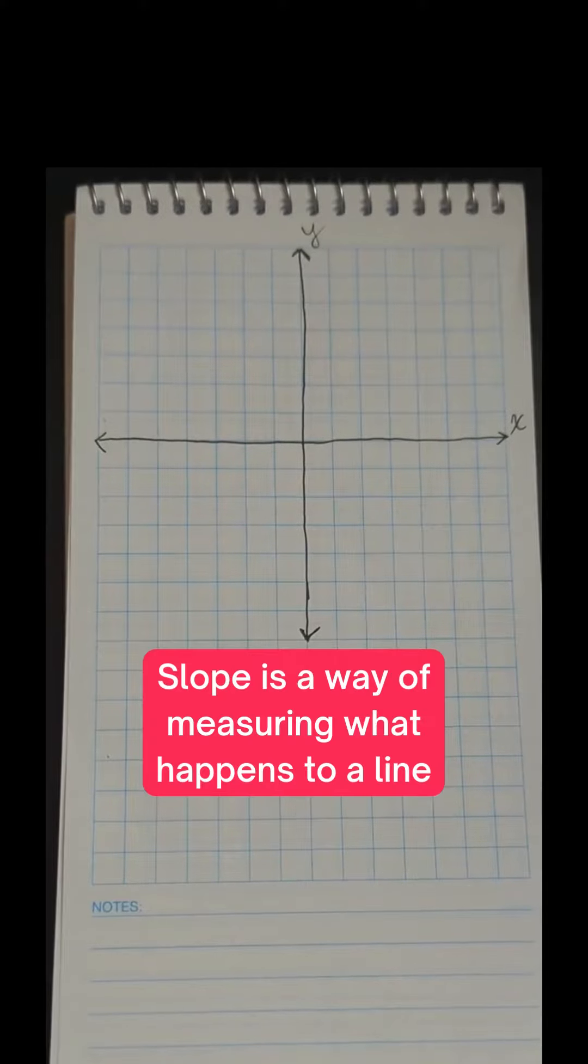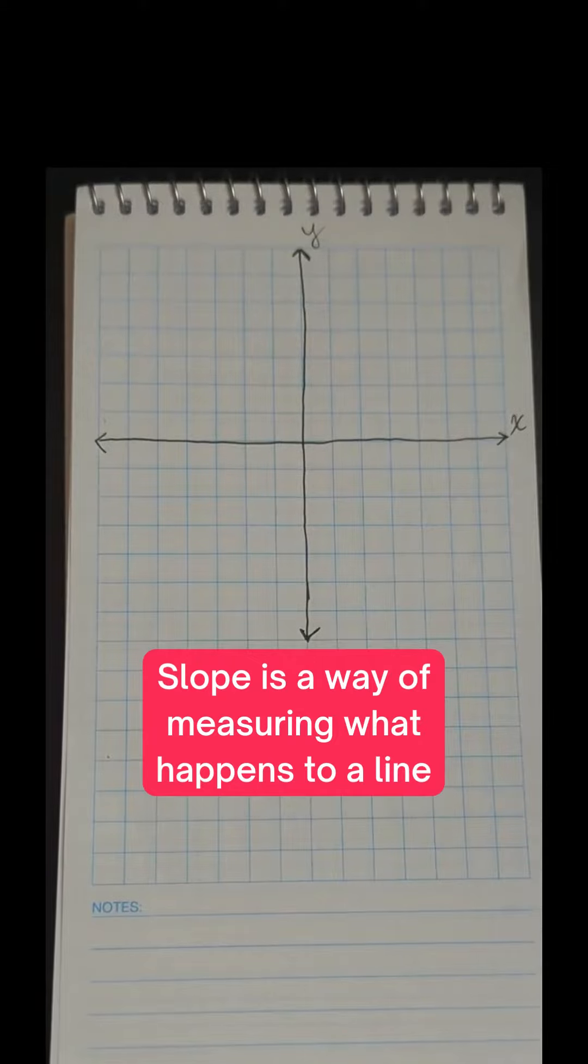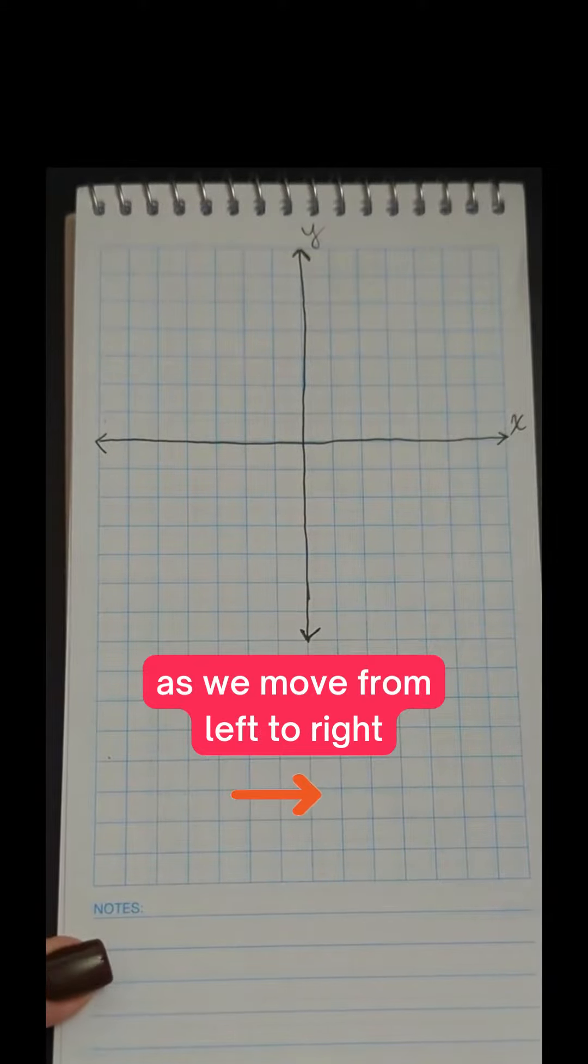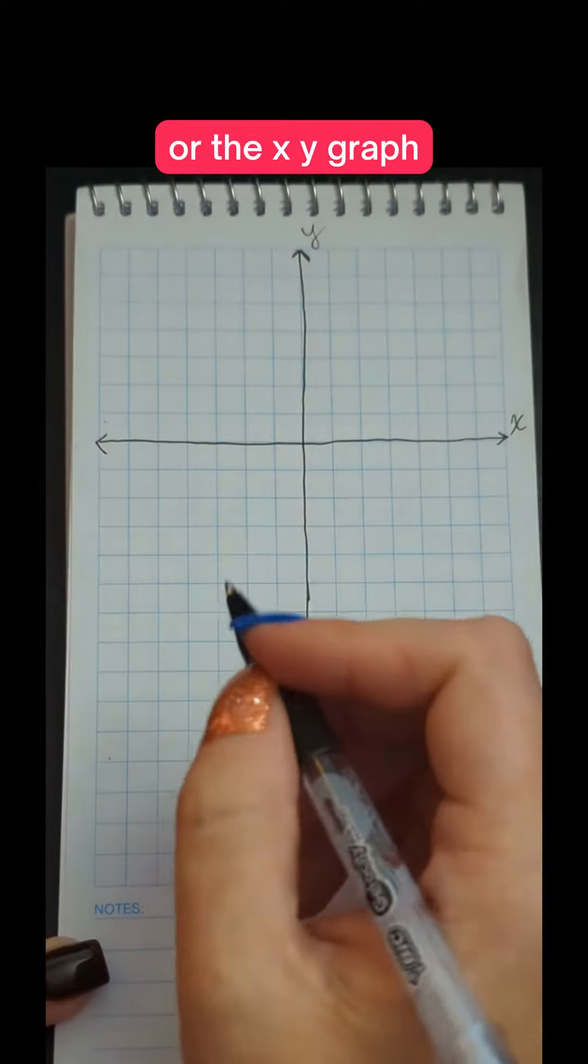What is slope? Slope is a way of measuring what happens to a line as we move from left to right on the coordinate plane, or the x-y graph.